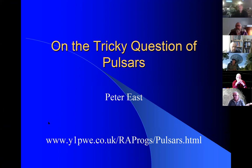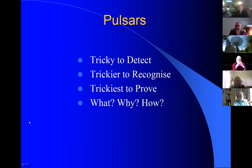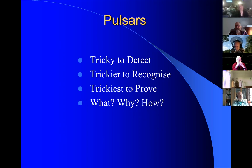Pulsars, coming at it from somebody with modest means and a small garden, so you can only have a small antenna. You'll find pulsars very tricky to detect, even trickier to recognise in your data. But the trickiest part is proving that you've actually got a pulsar.